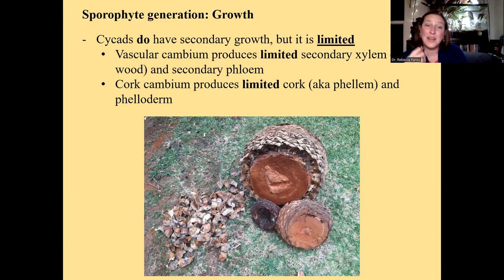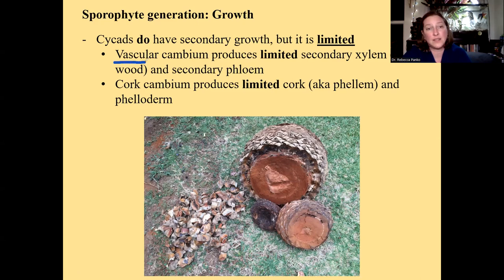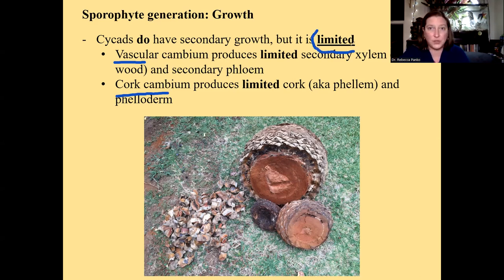Cycads have a vascular cambium, but it only produces a little bit of secondary xylem and a little bit of secondary phloem. Cycads also have cork cambium. The take-home message is that cycads are capable of secondary growth — because they have vascular cambium and cork cambium — but it's limited. They don't make a lot of these tissues.